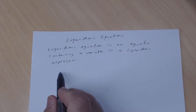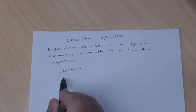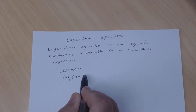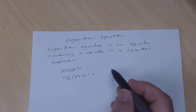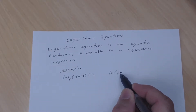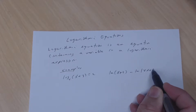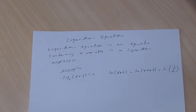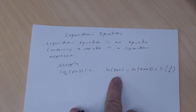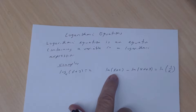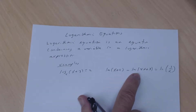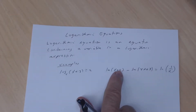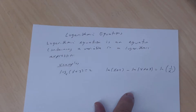For example, suppose we had the log base 4 of x plus 3 equal 2. That's a log equation — you can see the variable x in the argument. Another example would be the natural log of x plus 2, minus the natural log of 4x plus 3, equal the natural log of 1 over x. Notice that all three log terms here contain the variable x.